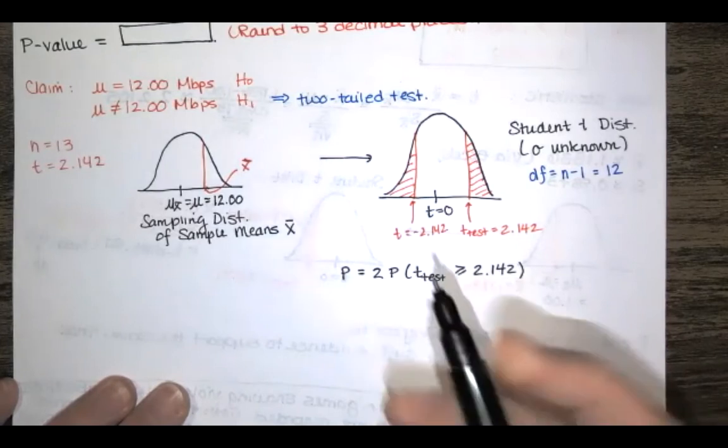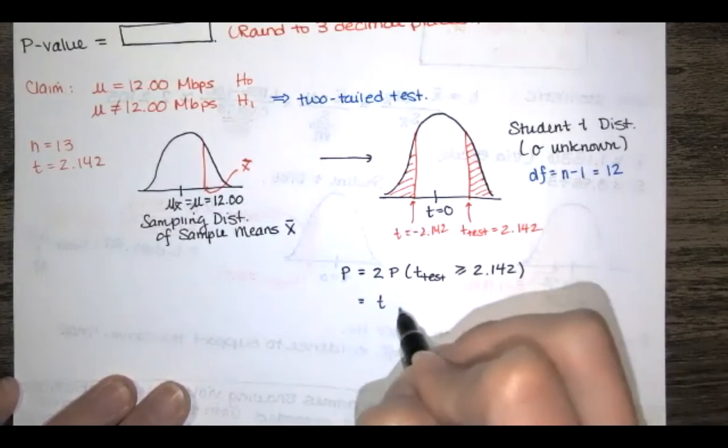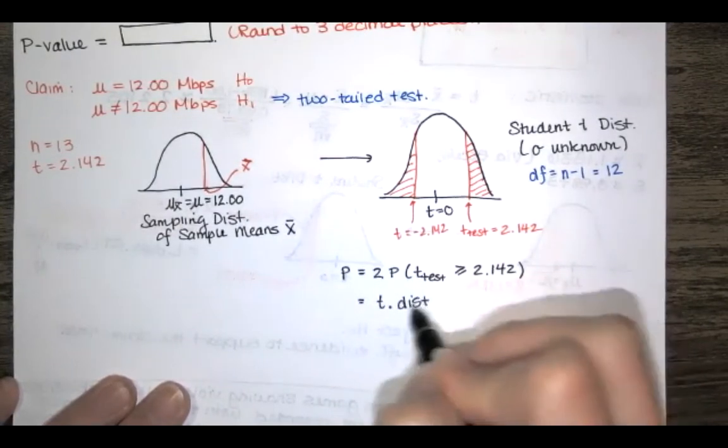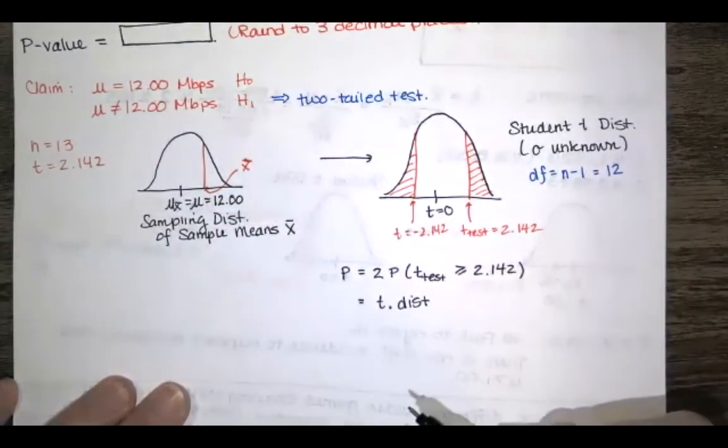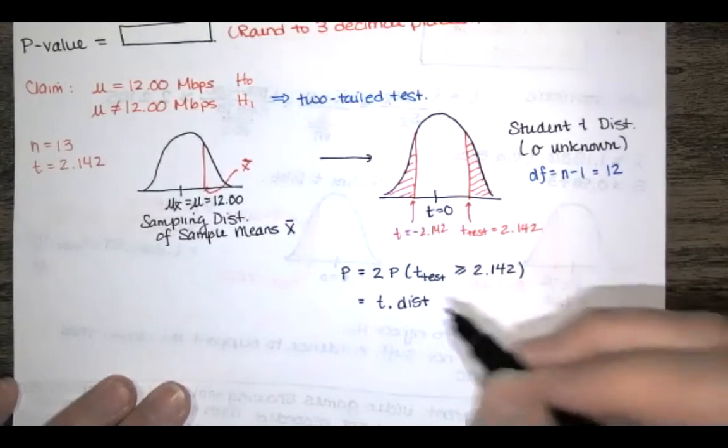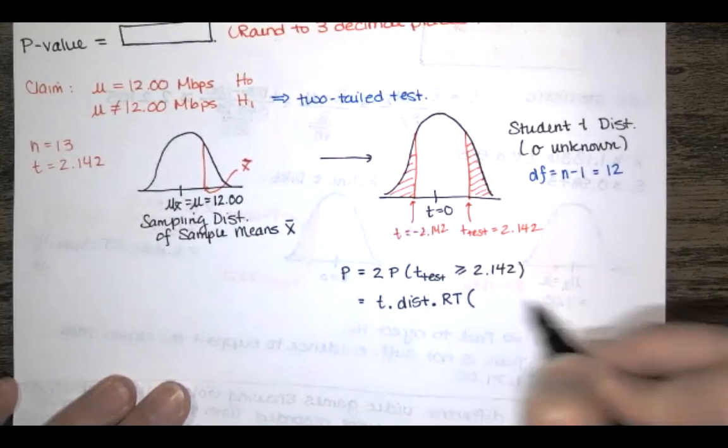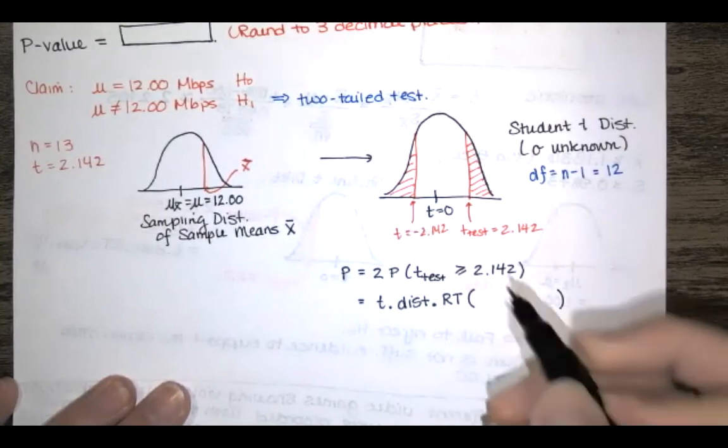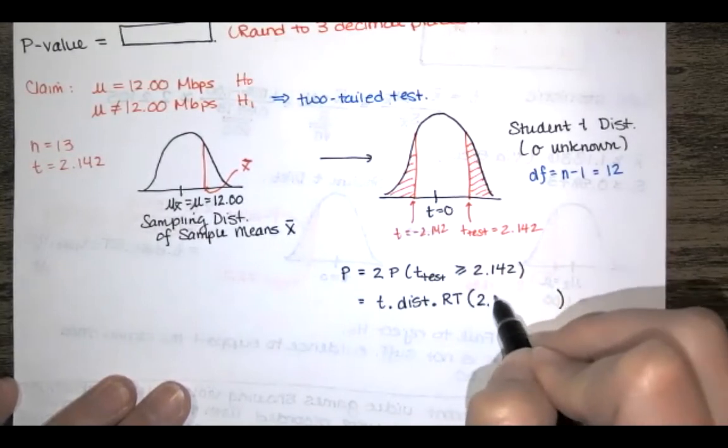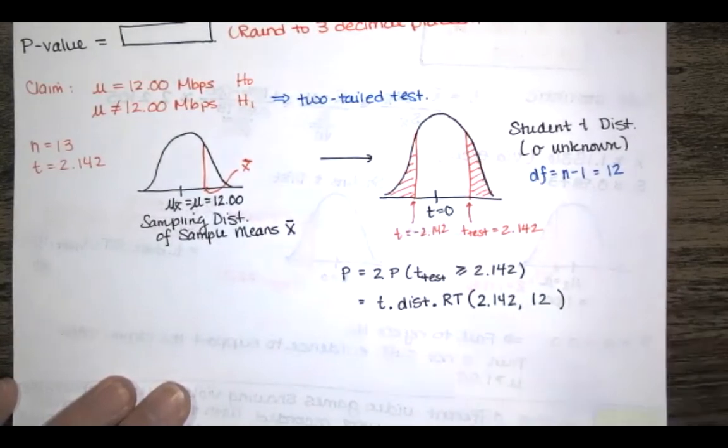And if I want that probability I can use excel this way the function is called t.dist that would give me area to the left of a test statistic. If I want area to the right of a test statistic I can do .rt for area to the right and then you enter the test statistic here and you enter the degrees of freedom which in our case is 12.